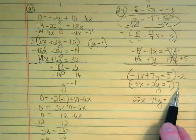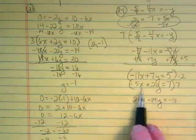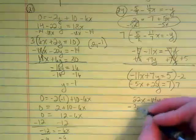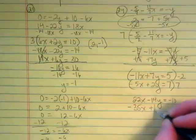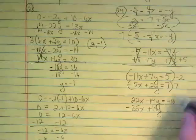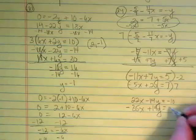My second equation, I'm going to multiply everything by 7. 7 times negative 5, negative 35x. 7 times 2y gives me plus 14y. And 7 times 7 is 49.